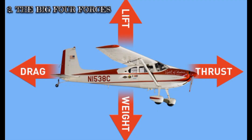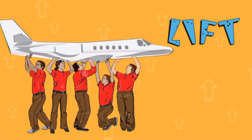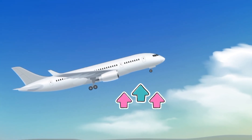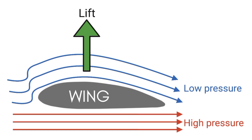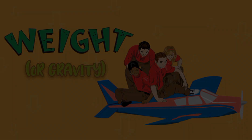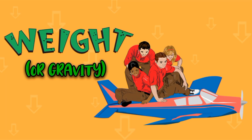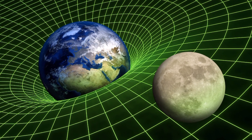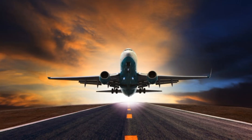The big four forces. Lift is what makes planes rise off the ground. Lift happens because of the difference in air pressure above and below a wing. Weight, or gravity, pulls everything towards the Earth's center. For an aircraft to fly, it needs enough lift to beat this pull.